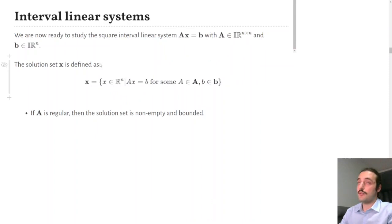We are now ready to define the interval linear system, bold A times bold X equals bold B, where bold A and bold B contain intervals. And this bold X is the solution set, which is defined as the set of points in the real Euclidean space for which the equation Ax equals B holds for some A in bold A and B in bold B. So the interval linear system is indeed a set of real linear systems. And if A is regular, then we know for sure that the solution set will be bounded and non-empty.